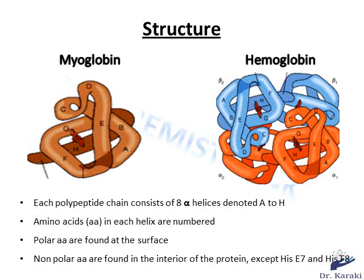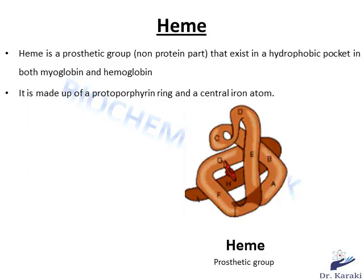The myoglobin polypeptide chain consists of eight alpha helices, denoted A to H, and likewise each polypeptide chain of hemoglobin's four subunits. Amino acids in each helix are numbered; for instance, histidine F8 is the eighth amino acid of helix F. In both myoglobin and hemoglobin, polar amino acids are found at the surface while non-polar amino acids are found at the core of the protein, except for histidine E7 and histidine F8, which are polar amino acids found in the core.